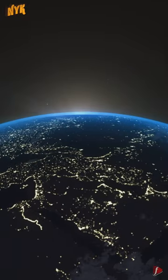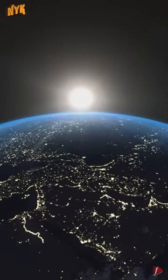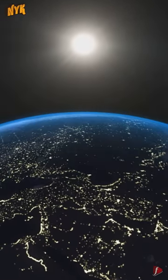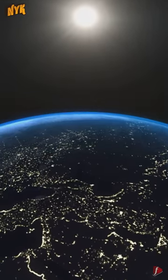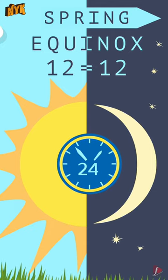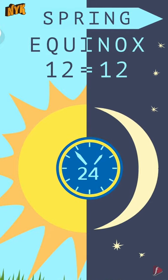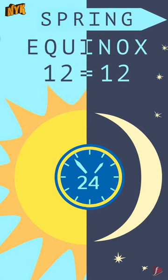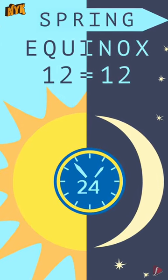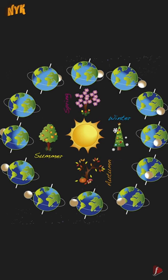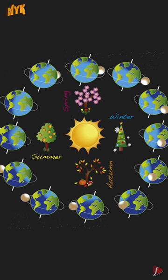This happens twice a year when the visible Sun is directly above the equator. The instant of time when the Earth's equator plane passes through the center of the Sun is known as equinox. There are two equinoxes that happen in a year.